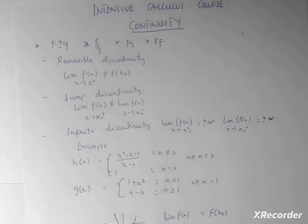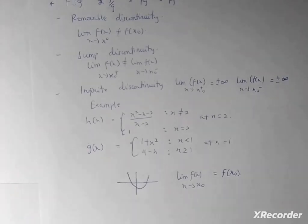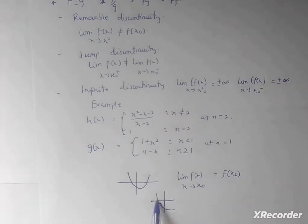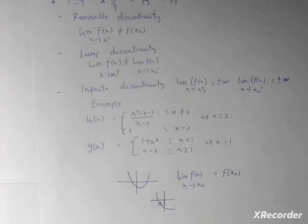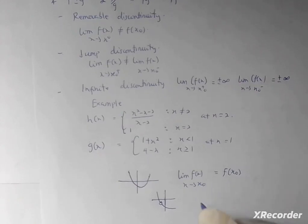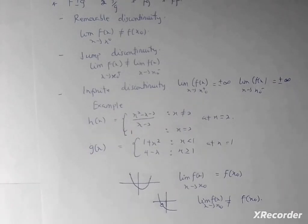Let's go to discontinuity. Under discontinuity, we look at removable discontinuity. When something is discontinuous, it means once you start, you have to take your hand off somewhere. If I draw a graph and move smoothly, but upon reaching a certain point there is a hole, then I continue — that is what we call removable discontinuity. The condition for removable discontinuity is that the limit of f(x) as x approaches x₀ will not be equal to f(x₀).